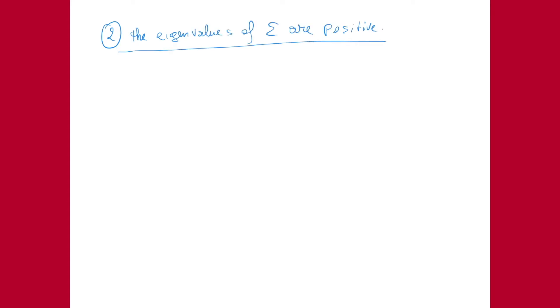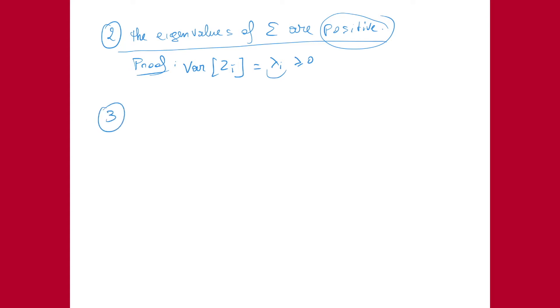The second important property is that the eigenvalues of matrix Sigma are positive and all different — we have P different positive eigenvalues. The proof is simple: from PCA we know that the variance of the i-th principal component Zi equals lambda_i, so the eigenvalues lambda_i correspond to variances of random variables, and a variance is always positive.